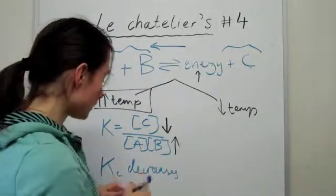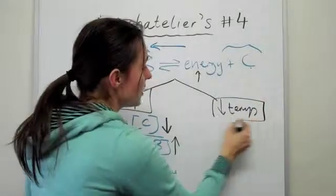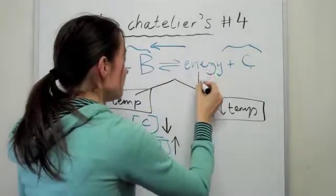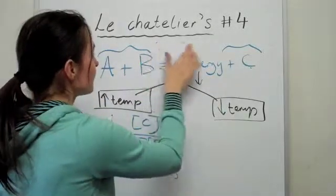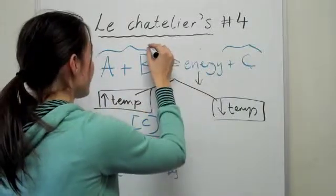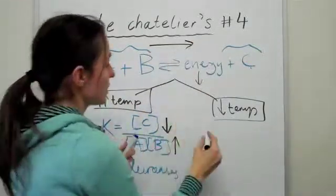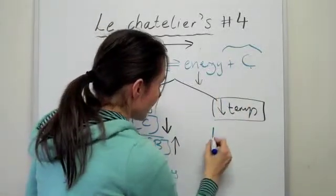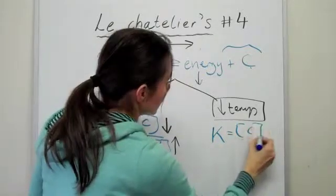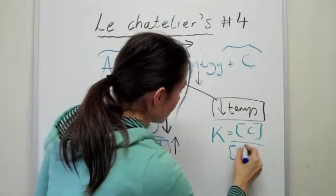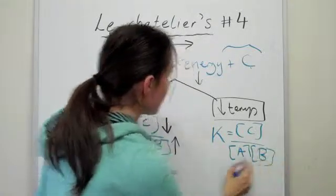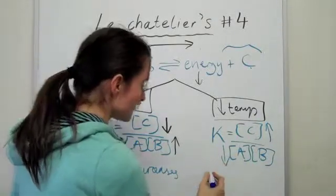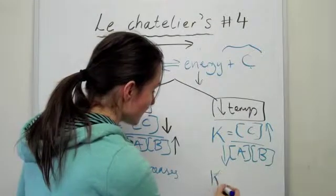Finally, when we look at a decrease of temperature, if the temperature decreases, then this energy drops. Which means that we have to generate a little bit more energy by going that way. So we're going forward. And this time, if we have a look again at KC value, K equals the concentration of C divided by the concentration of A times the concentration of B. Because we're going more forward, we're increasing the C value, we're decreasing these values, and so KC increases.